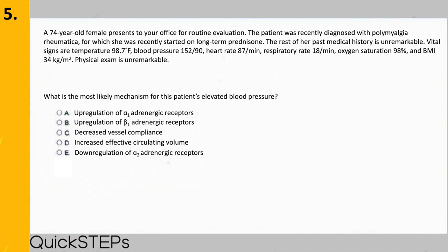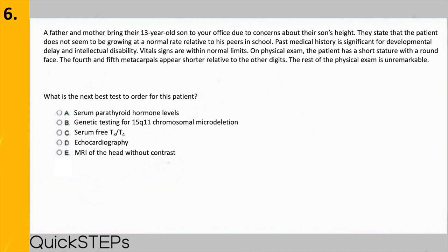This question is essentially asking for the reason this patient on prednisone for polymyalgia rheumatica has an elevated blood pressure. Corticosteroids such as prednisone can cause a transient leukocytosis due to demargination of neutrophils, an increase in serum glucose due to upregulation of gluconeogenesis, and elevated blood pressure through upregulation of alpha-1 adrenergic receptors — answer choice A. Unfortunately these are things you have to memorize about steroids, but once you do they'll give you a few points on test day.